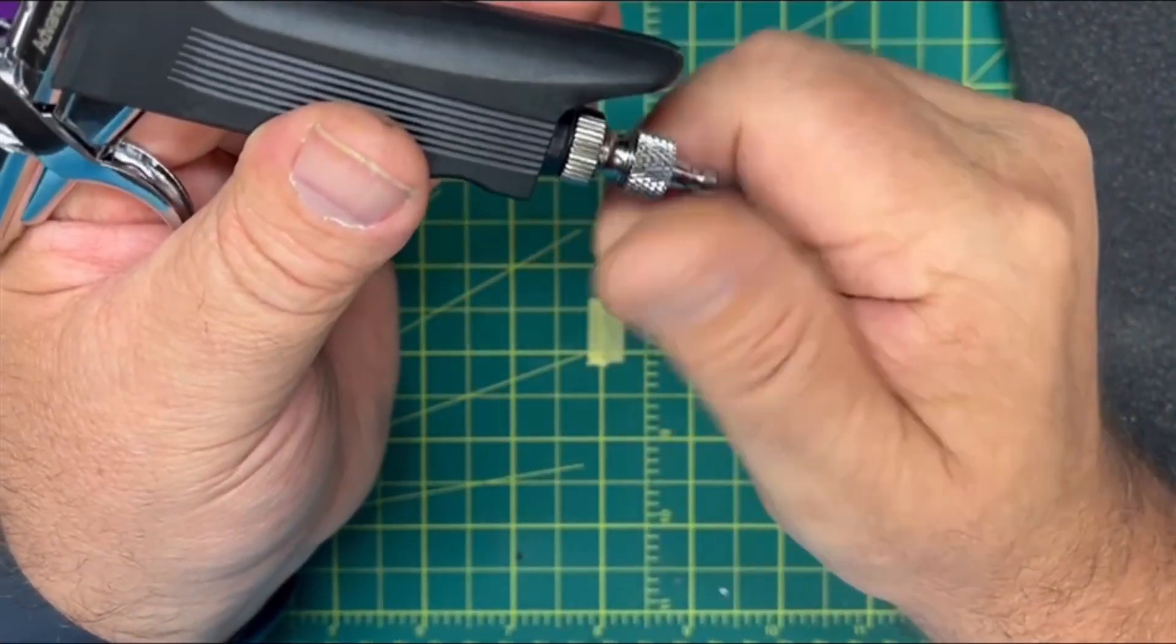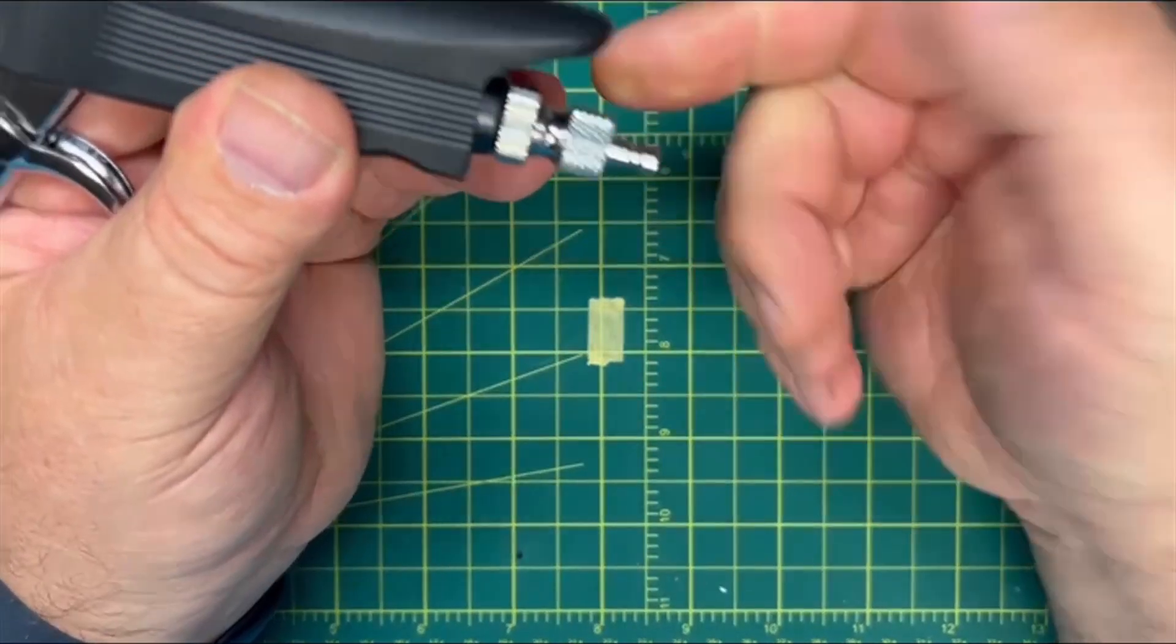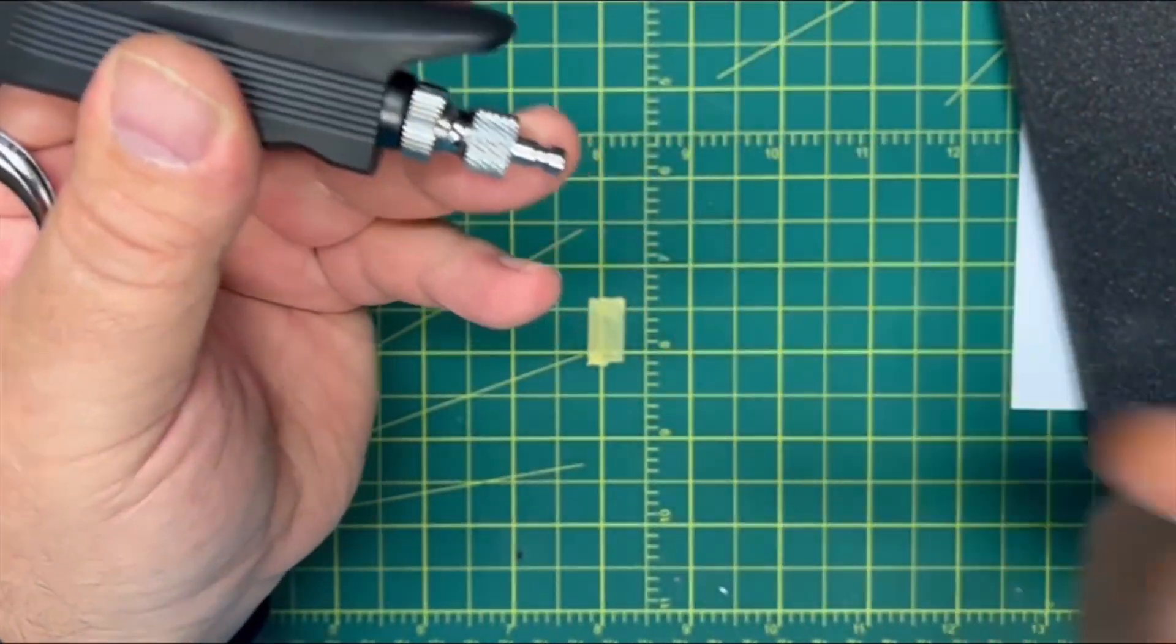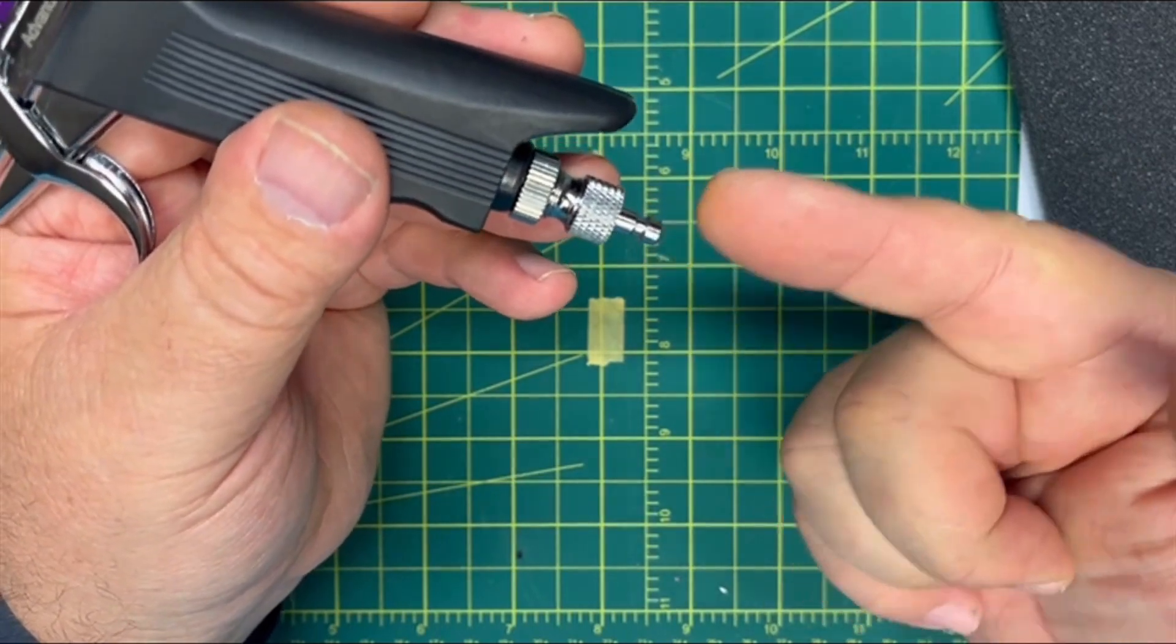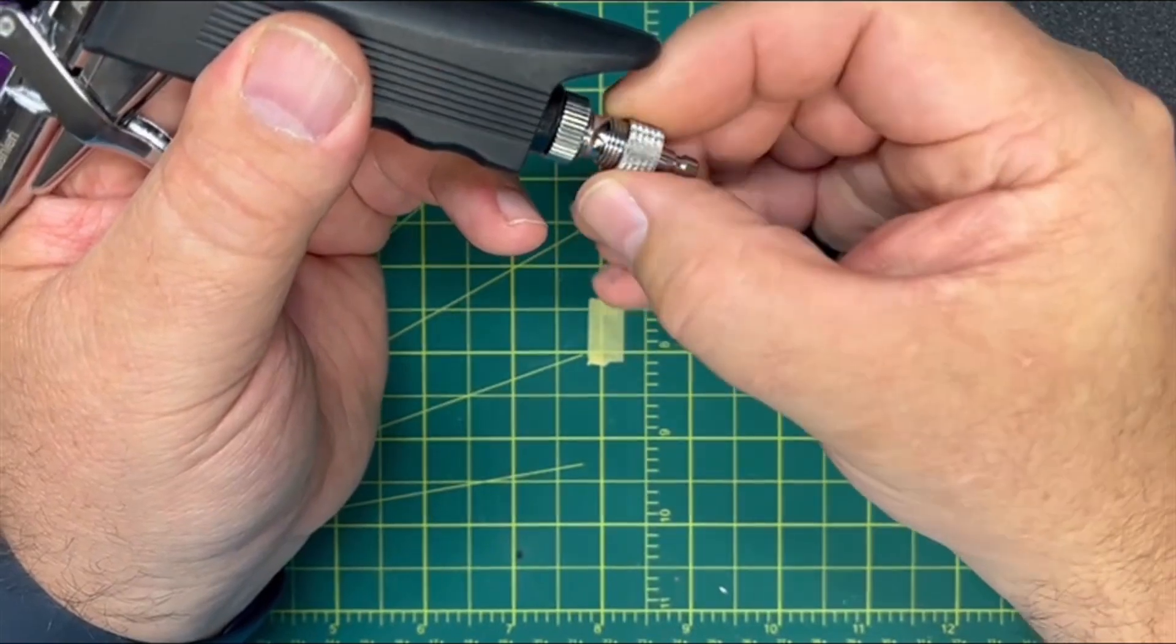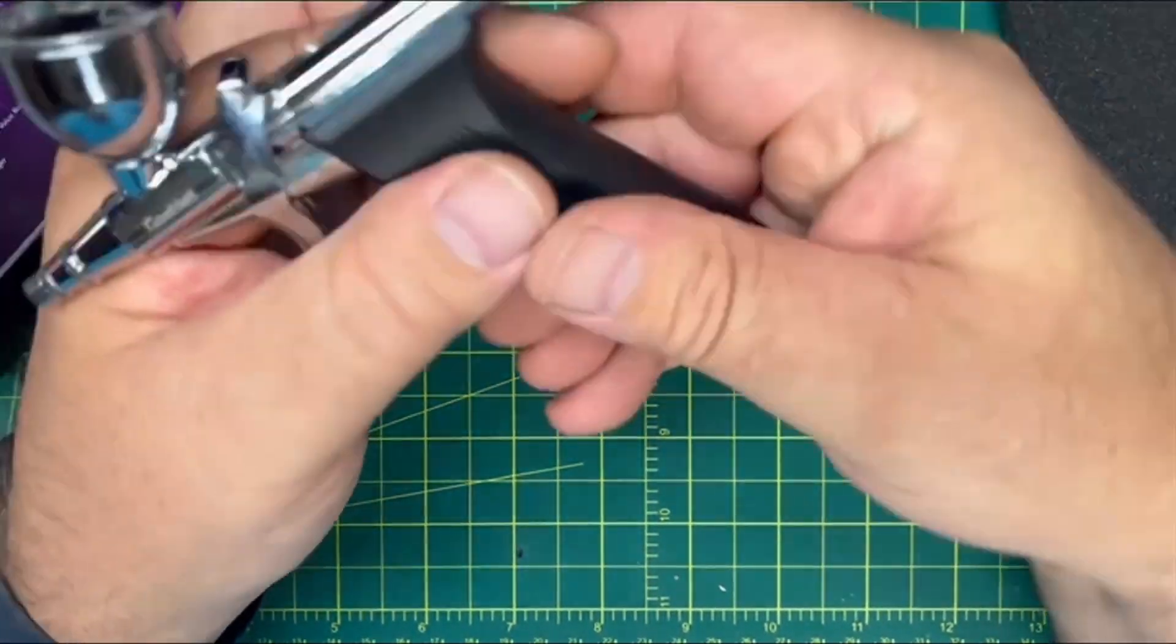And again, what a nice touch to give us the quick disconnect. You know I have the one fitting already on the hose, so now I can just pop it off and use whichever of the airbrushes I want to use. So that is great.